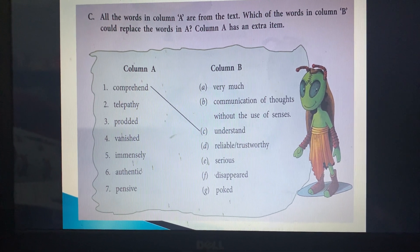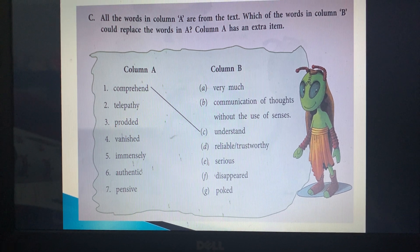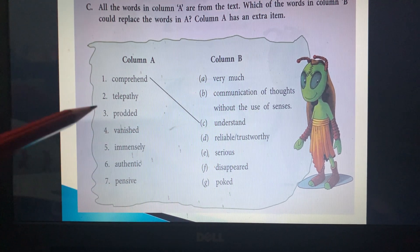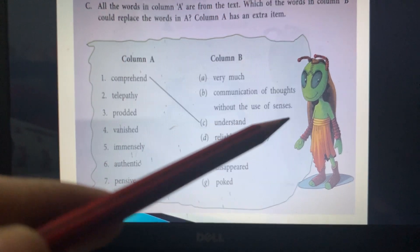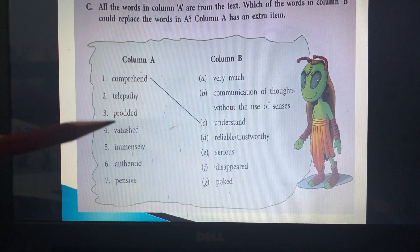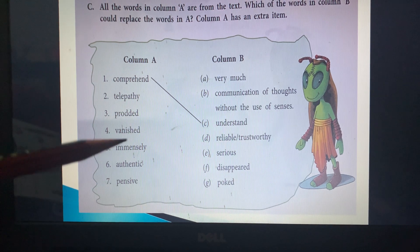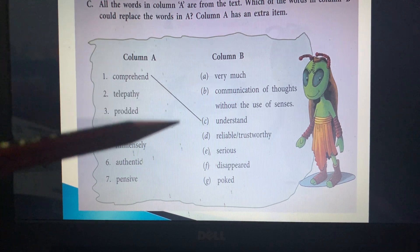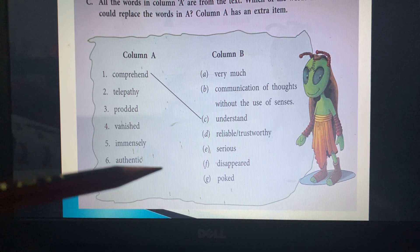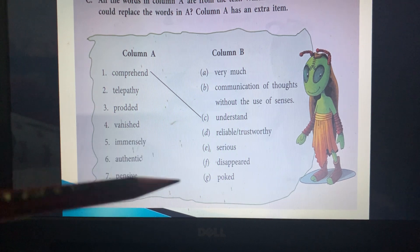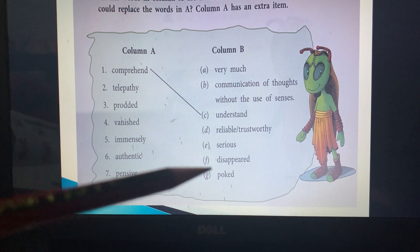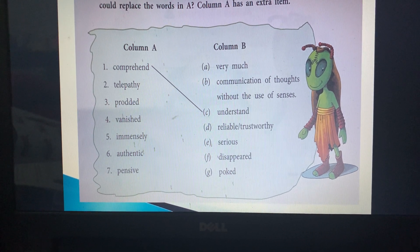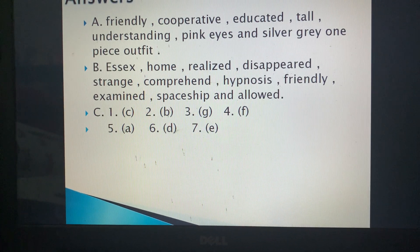Part C: Match words from the text with their meanings. 'Comprehend' means understand. 'Telepathy' means communication of thoughts without the use of senses. 'Prodded' means to poke. 'Vanished' means disappeared. 'Immensely' means very much. 'Authentic' means reliable or trustworthy. 'Pensive' means thinking deeply or seriously.